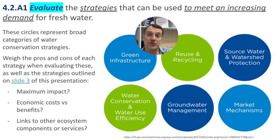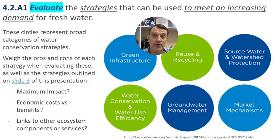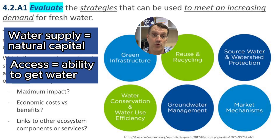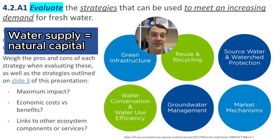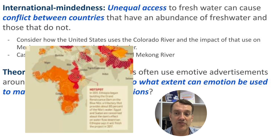You may be asked to evaluate different strategies for meeting increasing demand for fresh water. Remember that to evaluate, you need to look at the pros and cons of each strategy and reach a conclusion about whether the pros outweigh the cons or vice versa. These approaches don't necessarily increase the supply of fresh water — they may just increase access to it. The Nile River is a big hotspot: Ethiopia is building dams to meet its growing population needs, while Egypt has been entirely dependent on the Nile for thousands of years, so there are likely to be significant disagreements.